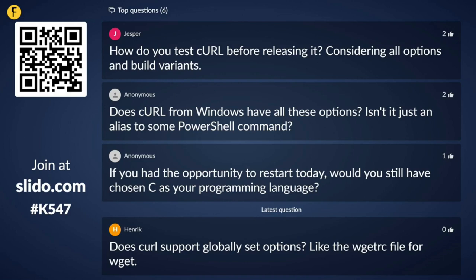How do you test curl before releasing it, given all the options and build variants? We have a huge amount of CI, a huge number of test cases, and we test many different build combinations on many different platforms. But we don't test all combinations and all possible platforms — we test the popular combinations on popular platforms and hope that covers it well enough. There will always be some gaps.